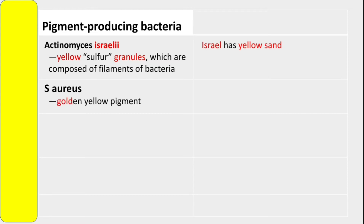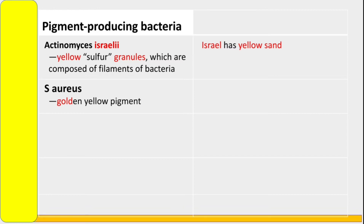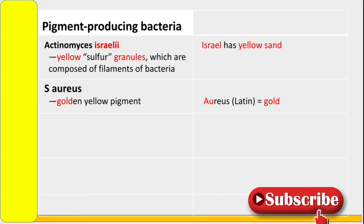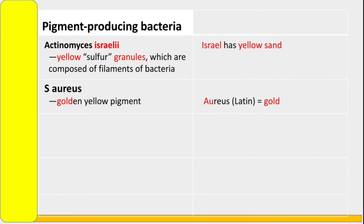The second bacteria is Staphylococcus aureus. This bacteria produces golden yellow pigment. If you check on the bottom you can see this golden yellow pigment. How do you remember this? 'Aureus' comes from Latin — it's a Latin word which means gold. If you know your periodic table, gold is represented by Au, which stands for aureus.